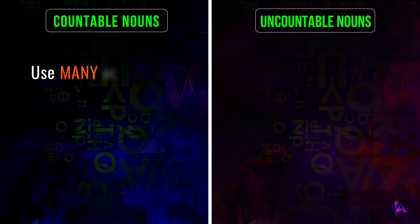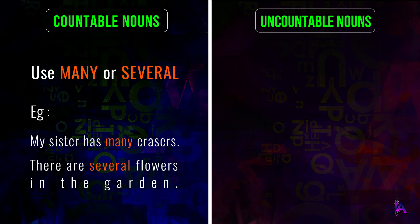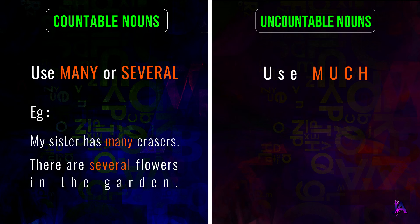Sixth, use many or several with countable nouns. For example, my sister has many erasers, or there are several flowers in the garden. Use much for uncountable nouns — I don't have much time.